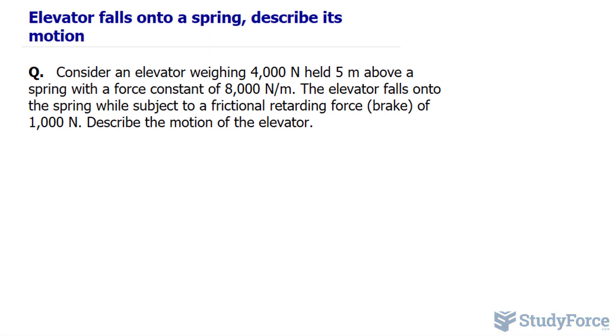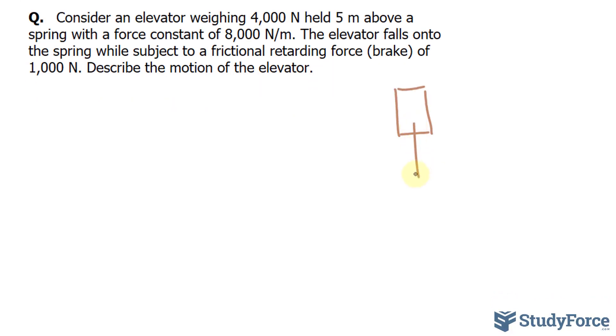Let's begin with an illustration. We'll represent this rectangle as the elevator, and it is falling down onto a spring. Here's my spring. The weight of this elevator, remember weight is calculated using mass times the acceleration due to gravity, is equal to 4,000 newtons.